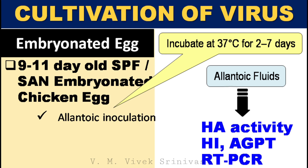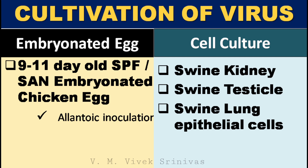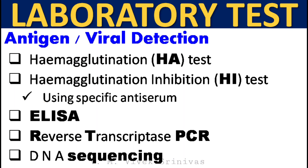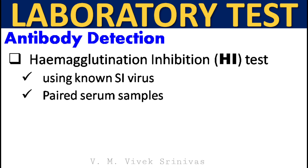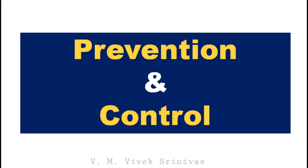The second method of cultivation is the cell culture system using swine kidney cells, swine testicle cells, and swine lung epithelial cells. For antigen detection: hemagglutination test, hemagglutination inhibition test using swine influenza virus-specific antiserum, ELISA, and reverse transcriptase PCR and DNA sequencing can be done. For antibody detection, hemagglutination inhibition test is done using known specific swine influenza virus. Paired serum samples are used for confirmation of infection.